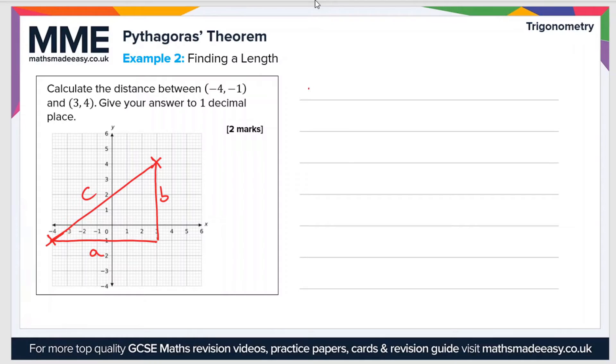First of all, let's calculate A. So A equals the difference in x values, so that's 3 and negative 4. The difference is 3 minus minus 4, which equals 7. And then B is the difference in y values, so that is 4 and negative 1. So that's 4 minus minus 1, which gives us 5.